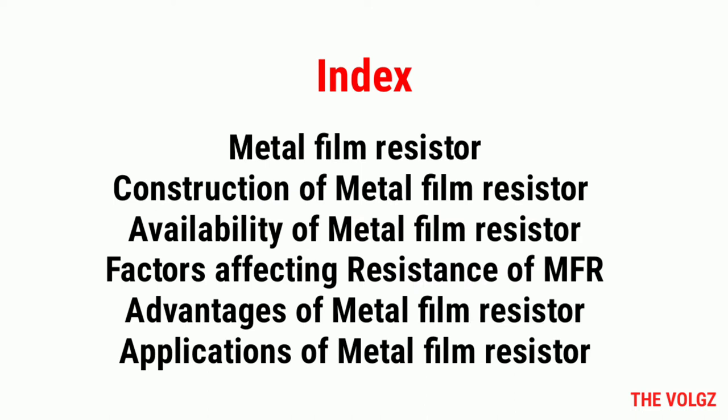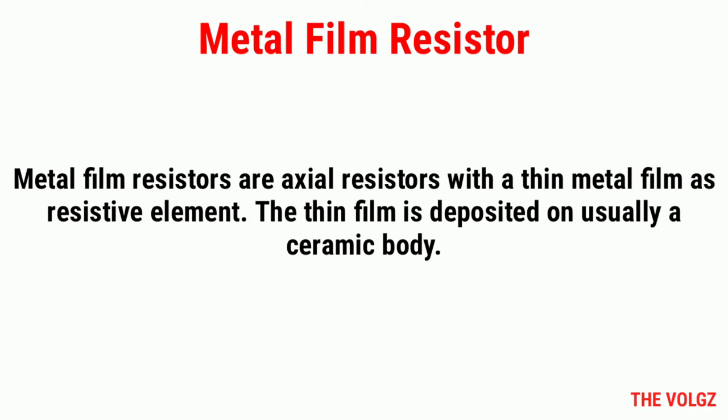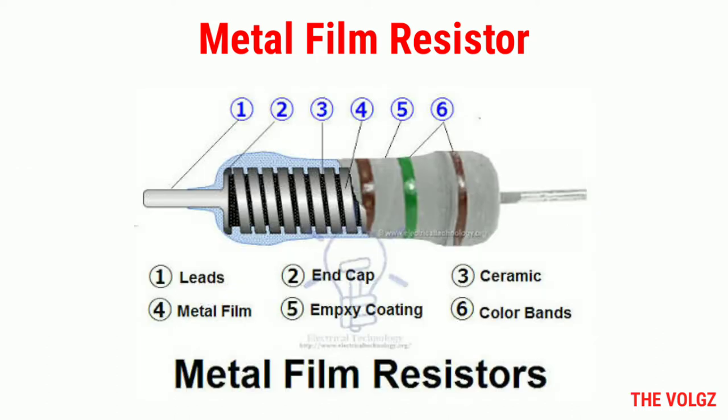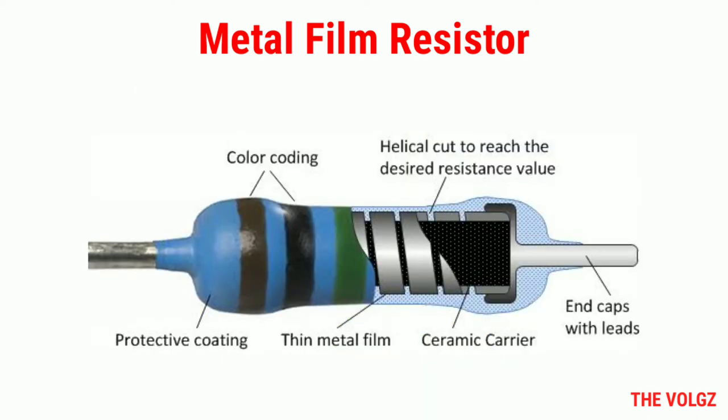These are the complete list of topics covered in this video. Metal film resistor. Metal film resistors are axial resistors with a thin metal film as resistive element. The thin film is deposited on usually a ceramic body. The resistor which uses metal film to limit the flow of electric current to a certain level is called a metal film resistor.